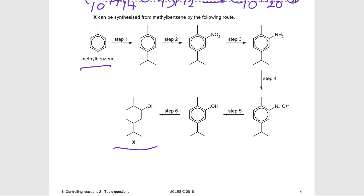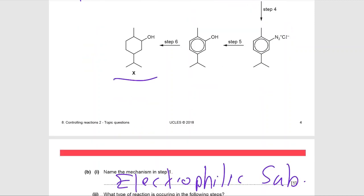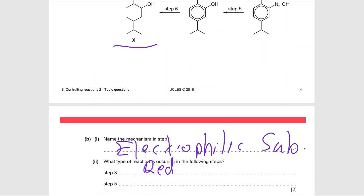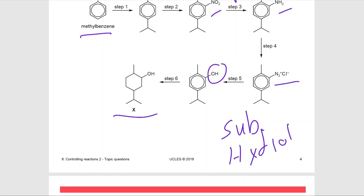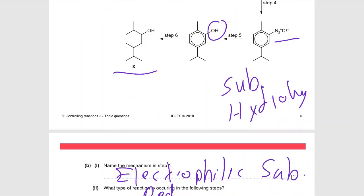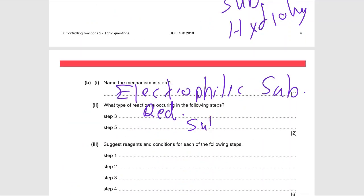In step three, NO₂ is converted into NH₂, so this is a reduction reaction. In step five, the diazonium salt becomes OH - this can be called substitution or hydrolysis. So for step five we can say substitution or hydrolysis.